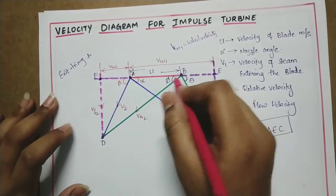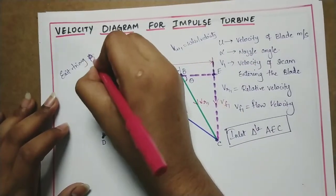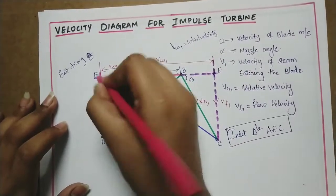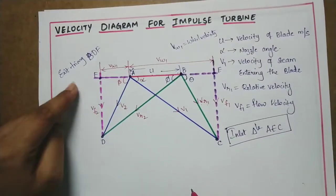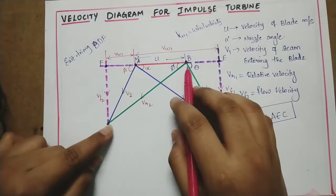Next is wheel velocity Vw1. And the exit triangle - exit triangle B, D, F.